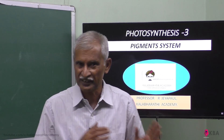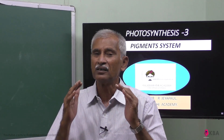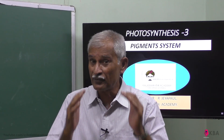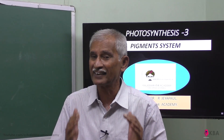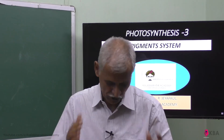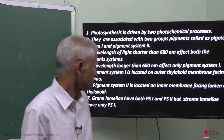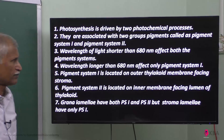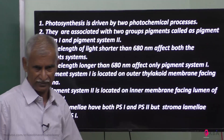In our discussion, coloring pigments play a very important role in fixing solar energy. So it is to be known for photosynthesis. Photosynthesis is driven by two photochemical processes.